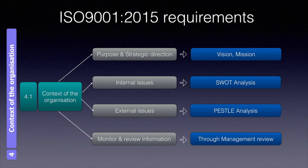There is no definition specified in ISO 9000:2015 for 'issue,' so we can refer to a dictionary. The dictionary defines 'issue' as an important topic or problem for debate or discussion. Internal issues can be classified into positive issues — the strengths of the organization that help in achieving the vision, mission, or business plan (e.g., high employee satisfaction, lower employee turnover) — and negative issues, which are weaknesses like higher rejection rates or higher inventory levels. Both can be controlled by the organization.